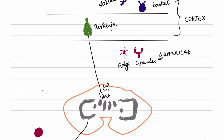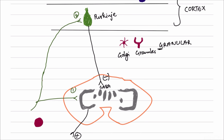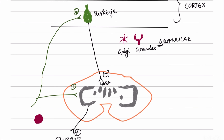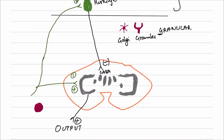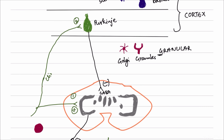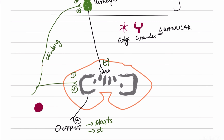The climbing fibers give rise to two connections. First, they synapse directly with the deep nucleus, releasing excitatory neurotransmitter, which activates the deep nucleus and initiates movements. Second, they synapse with the Purkinje fibers, activating them. When Purkinje fibers are activated they inhibit the deep nuclei, stopping a movement. So climbing fibers from the olivocerebellar tract can both start a movement (via direct deep nucleus excitation) and stop a movement (via Purkinje fiber inhibition of the deep nuclei).